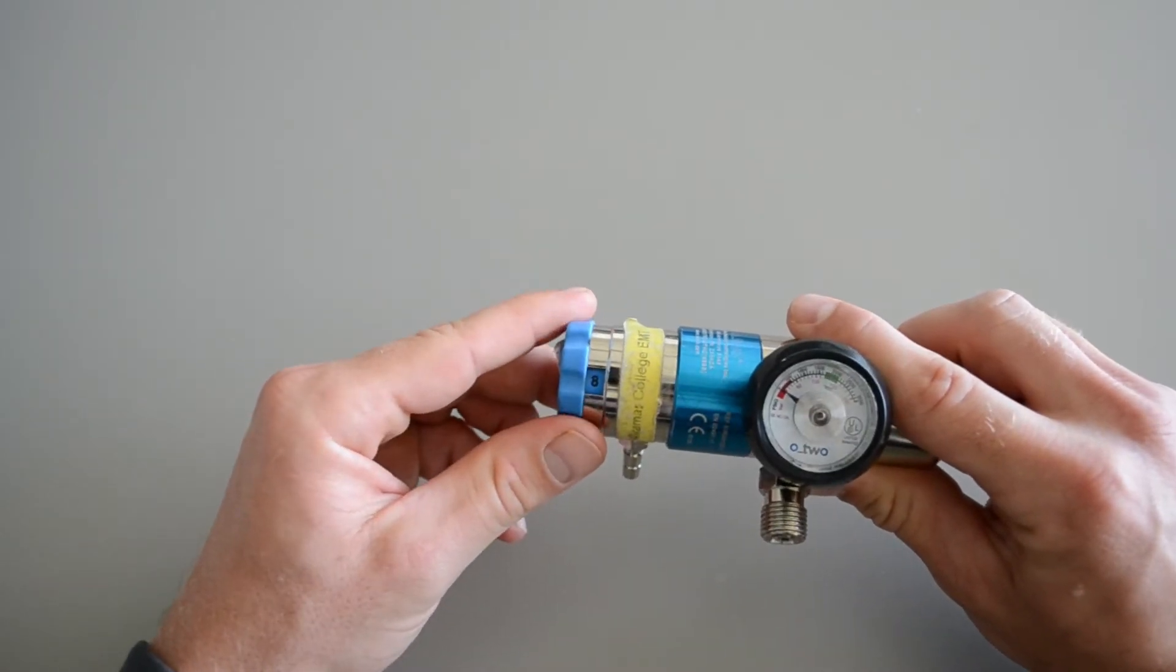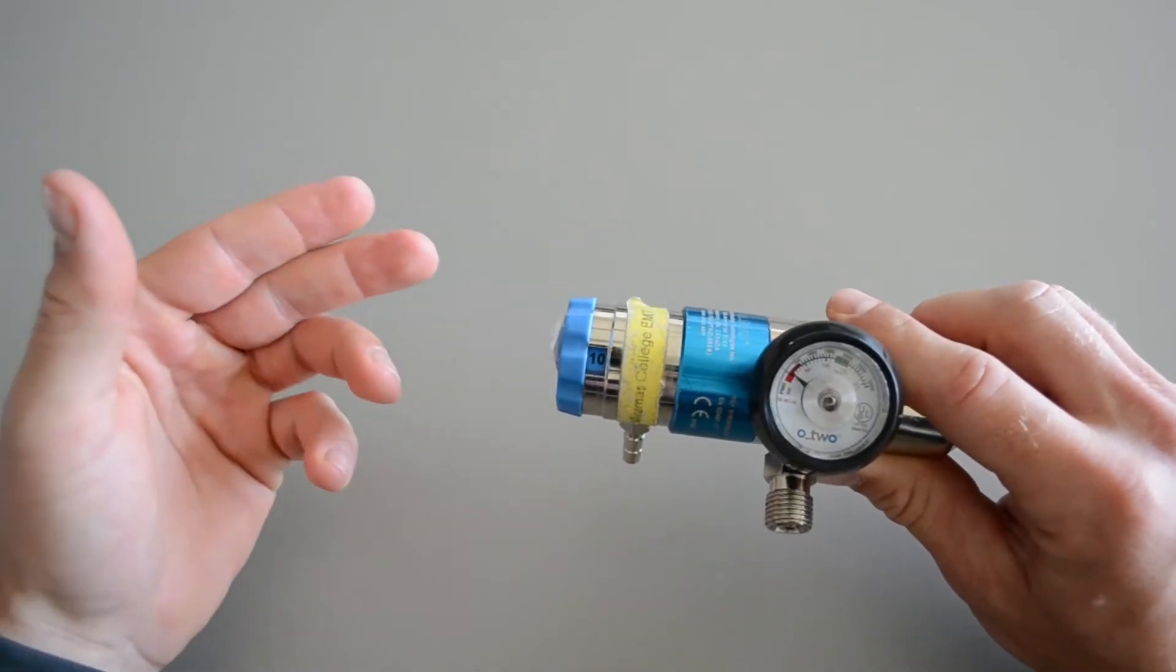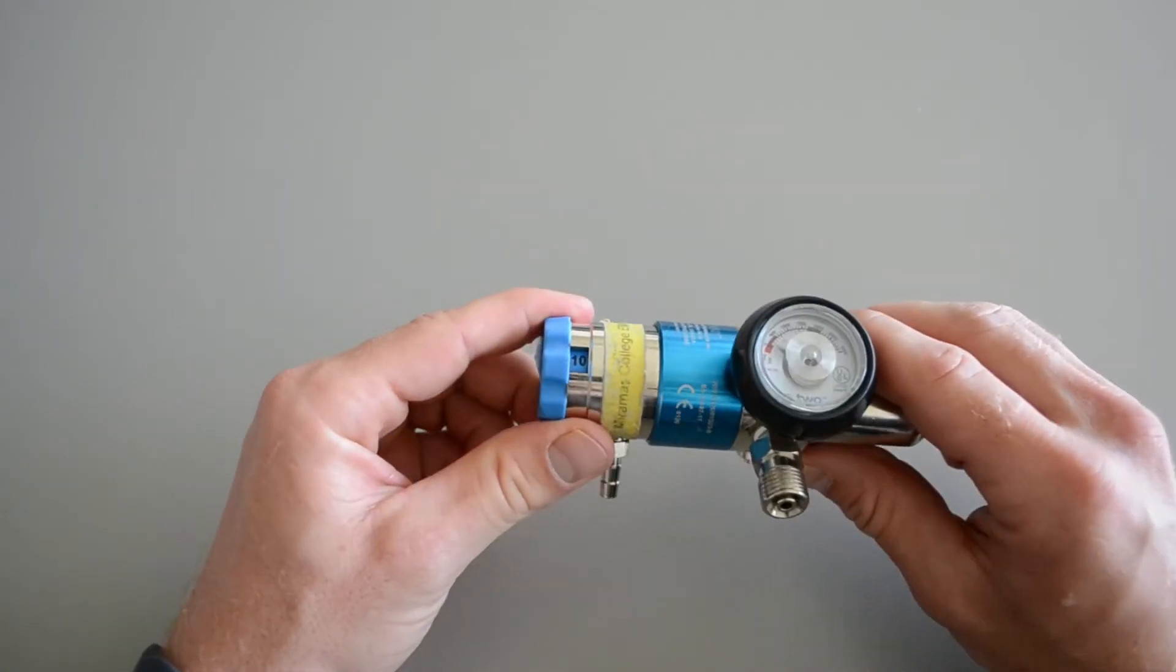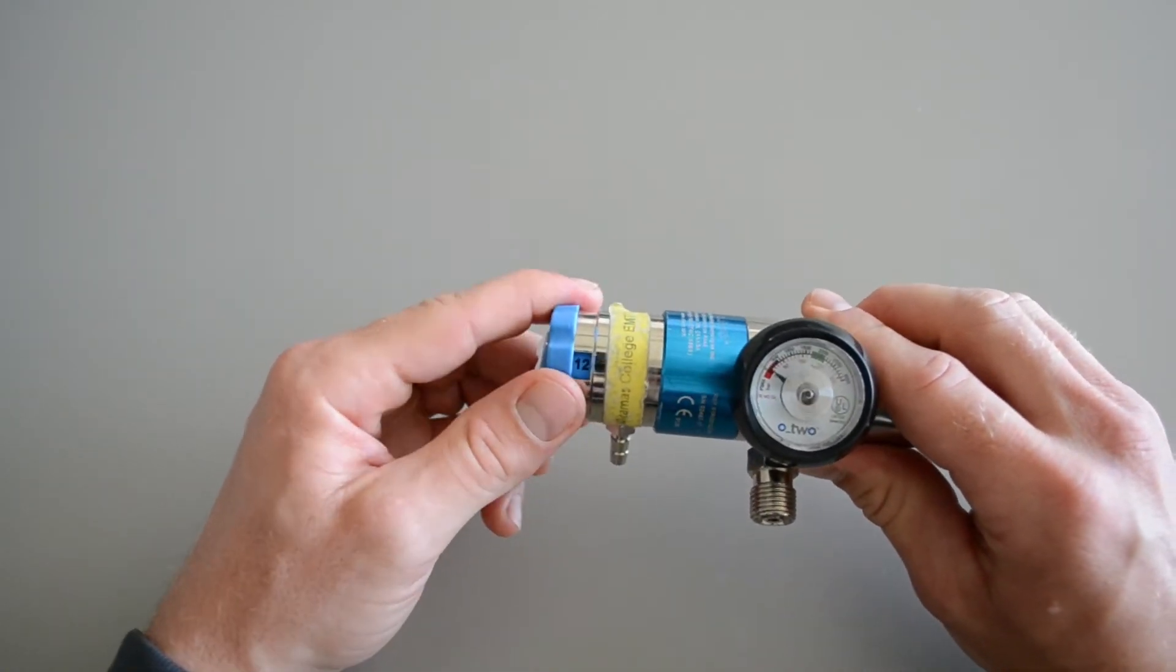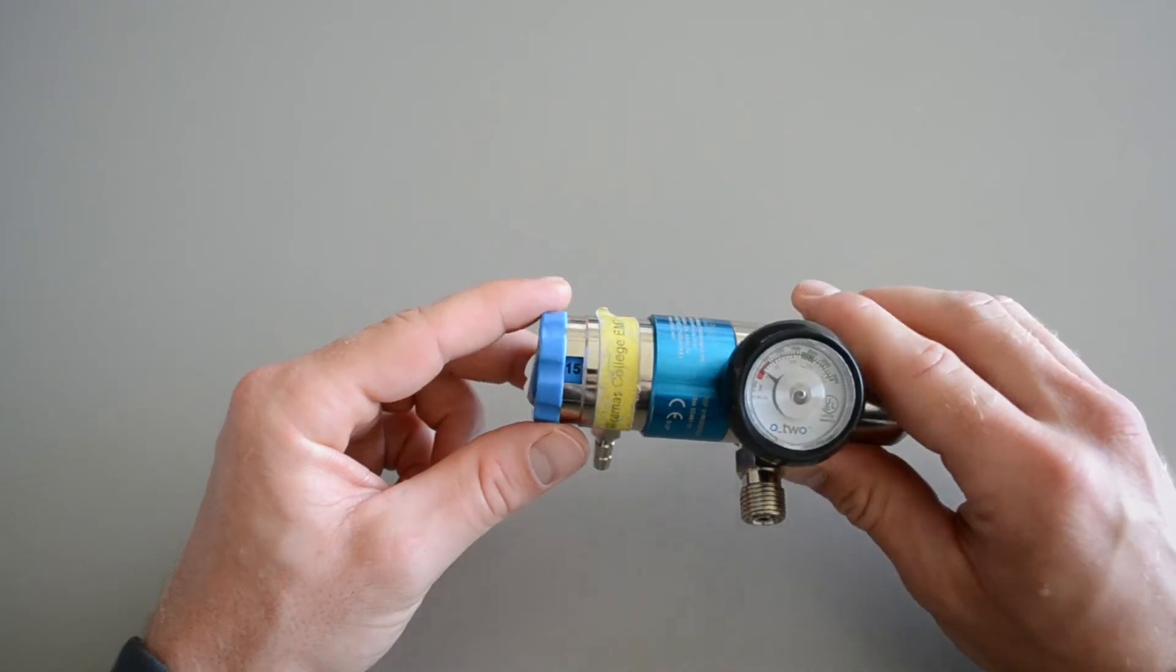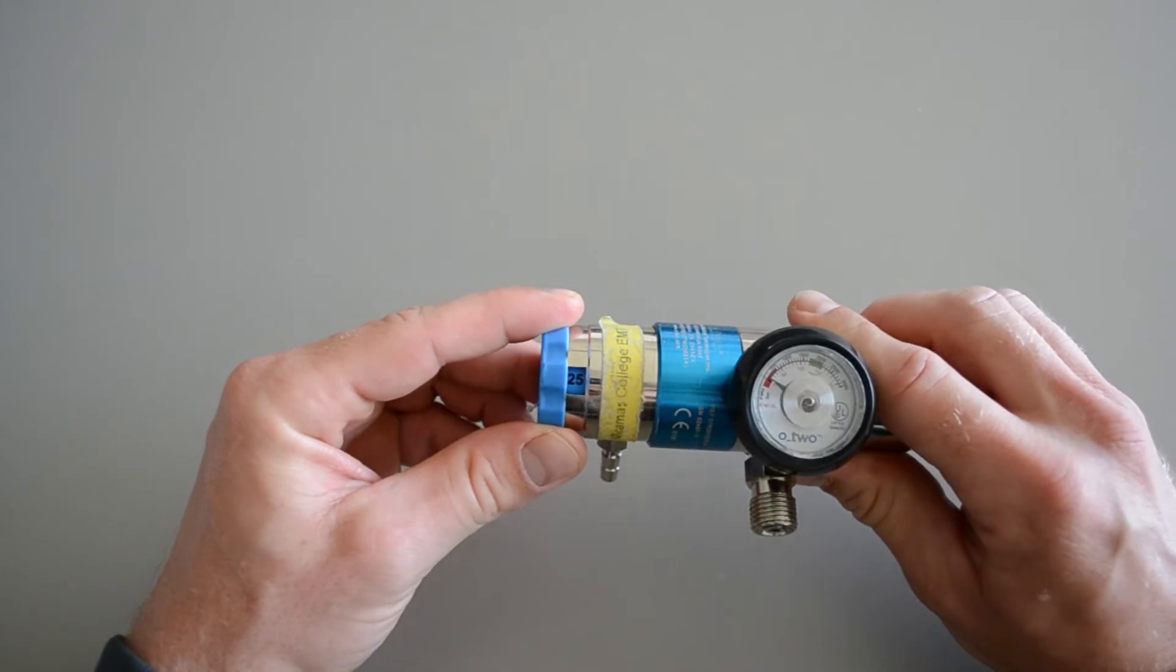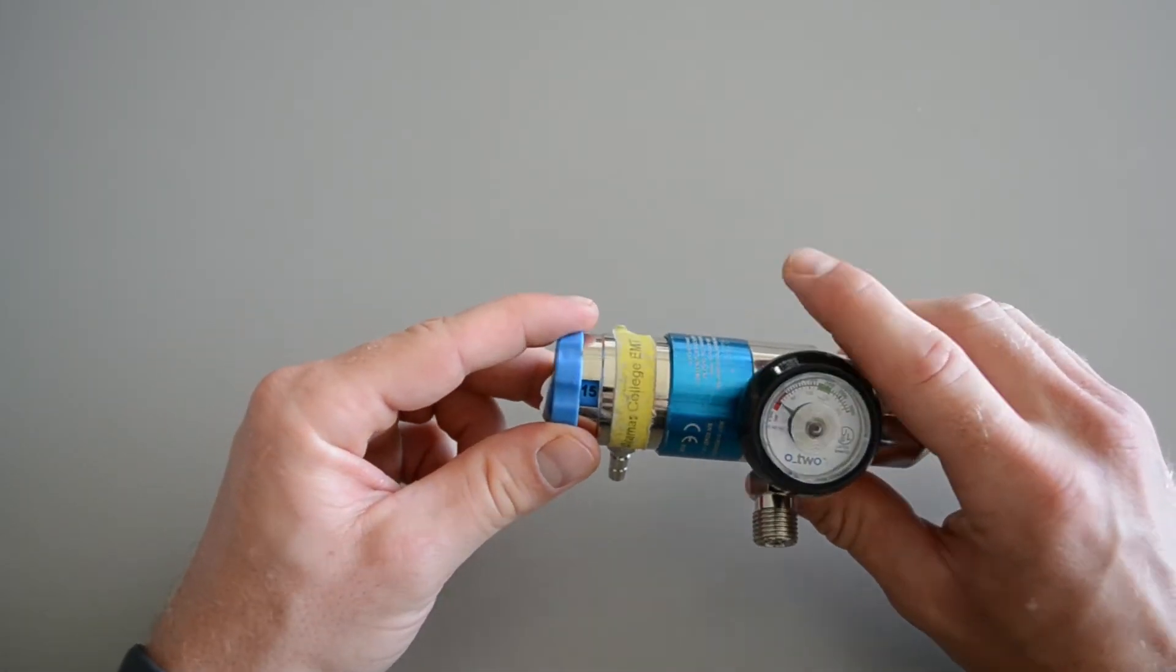8 liters a minute you might use with a nebulizer, 10 liters a minute, that's where we start with our non-rebreather mask, and then it jumps to 12, followed by 15. 15 is also the setting you'll use for BVM. There's additional settings, 20 and 25, don't worry about those, we do not use anything above 15. 15 is the max.